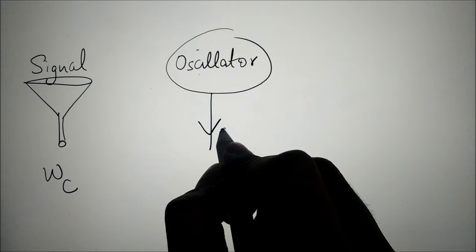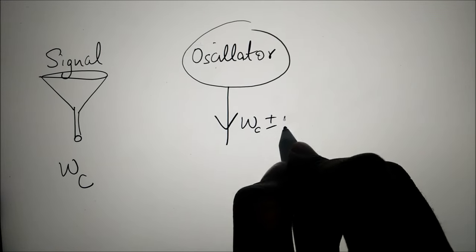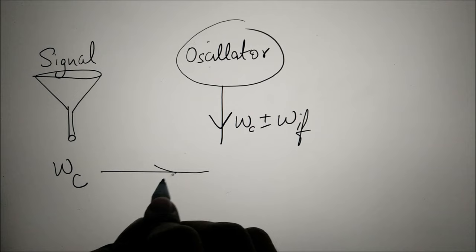One common way to isolate the exact frequency you want is to use an oscillator to multiply the carrier frequency you are targeting.